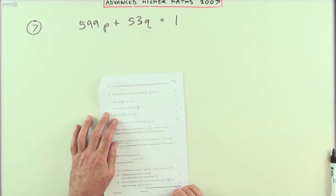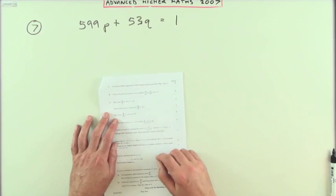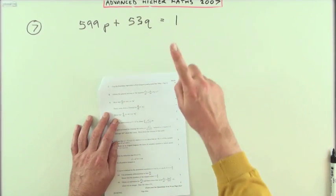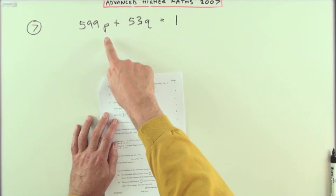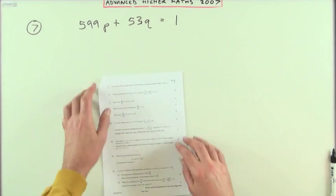Number 7 from the 2007 Advanced Higher, using the Euclidean algorithm. Here's a Diophantine equation, even though it doesn't mention it, and you have to find integers p and q which satisfy it.